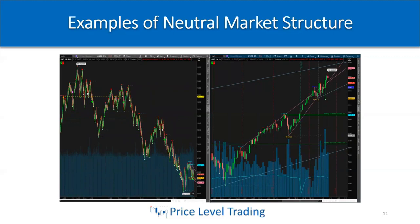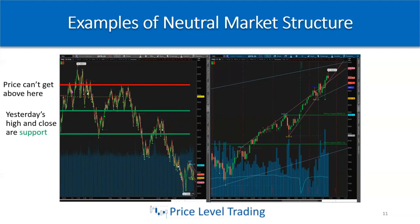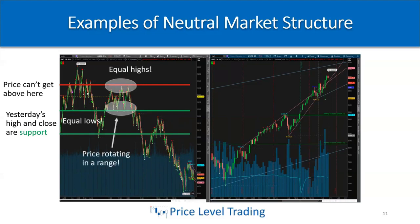Some examples of neutral market structure using the same NQ chart. Price can't get above the red line and we have yesterday's high and close as support. Within about an hour's worth of time, price is rotating in a range — equal highs and equal lows. The trading plan is to sell the top with a stop above targeting the other side of the consolidation at support, or buy the bottom with a stop below the equal lows targeting back to the top of this rectangle.